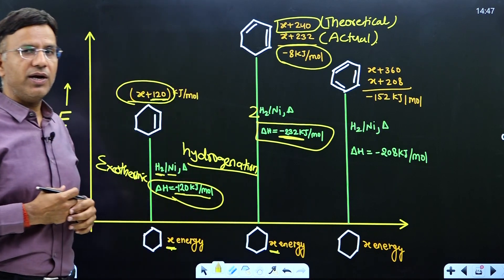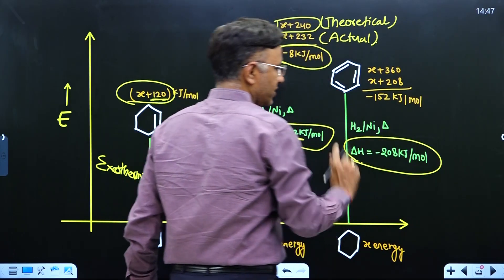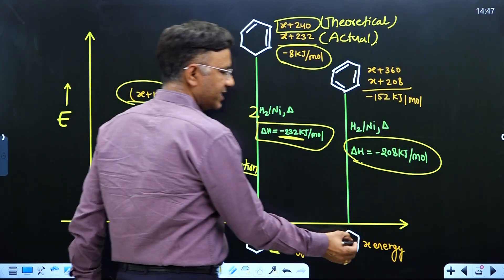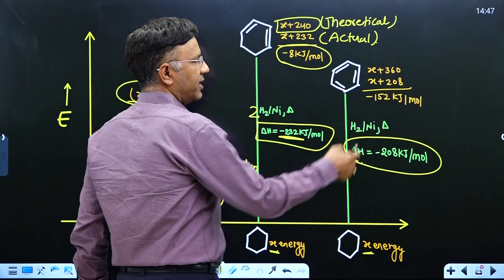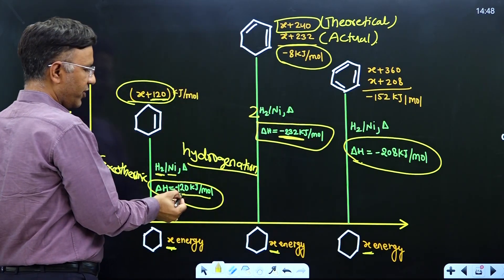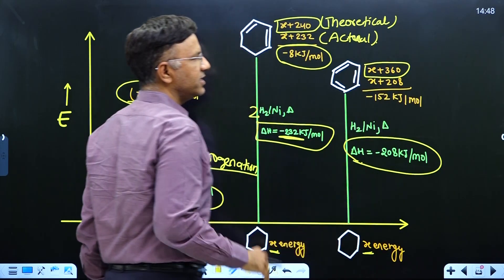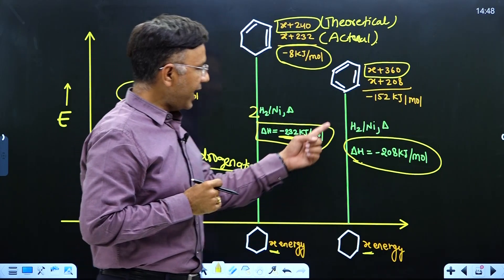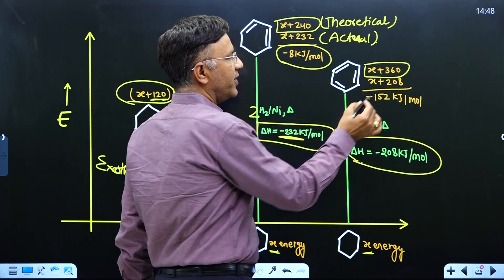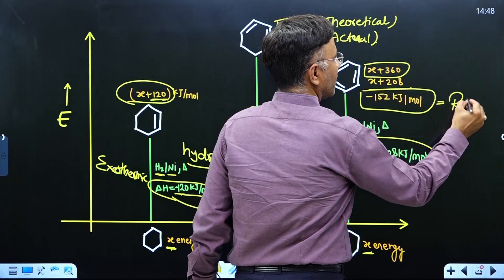Now let us calculate the resonance energy of benzene. Let the energy of cyclohexene be x. Benzene has three pi bonds, so when one pi bond is reduced the heat of hydrogenation is 120. For three pi bonds, the theoretical heat of hydrogenation must be x plus 360. But the actual heat of hydrogenation of benzene is 208, so the actual energy is x plus 208.